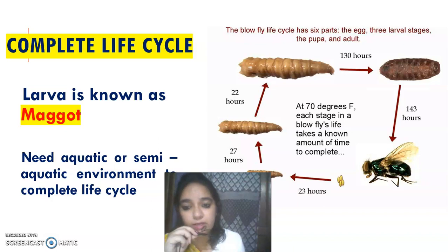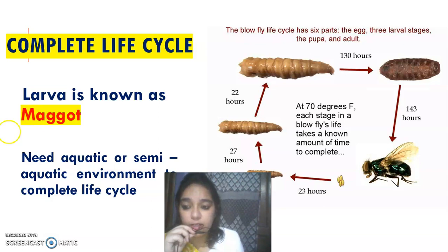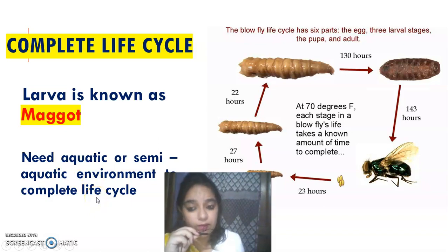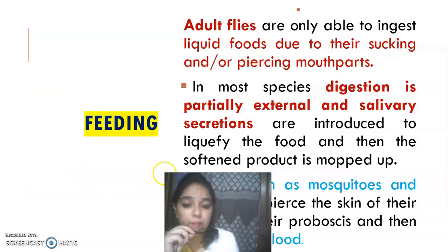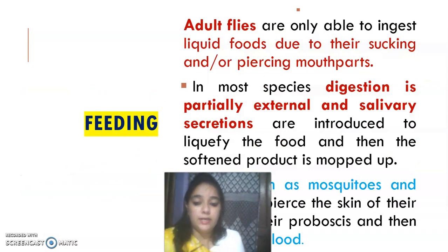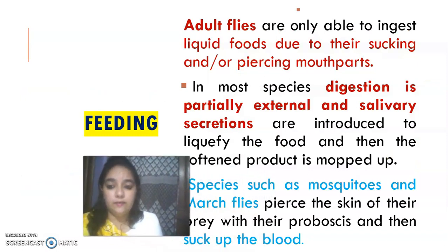Maggots are the larvae of Order Diptera. They always need an aquatic or semi-aquatic environment to complete their life cycle — in a dry environment they cannot complete it. Next comes feeding.